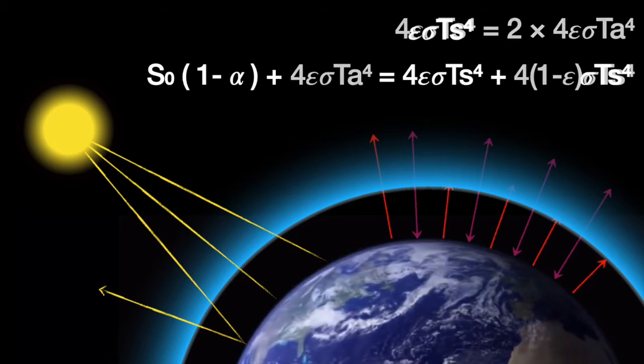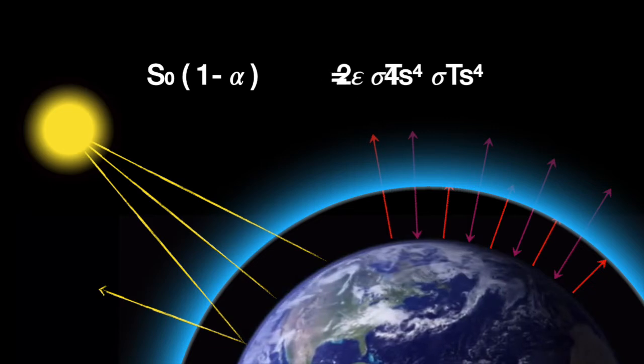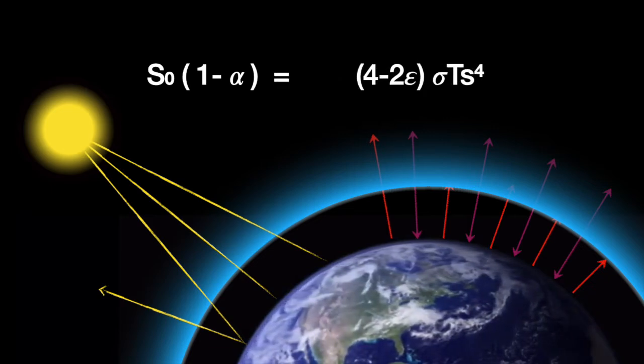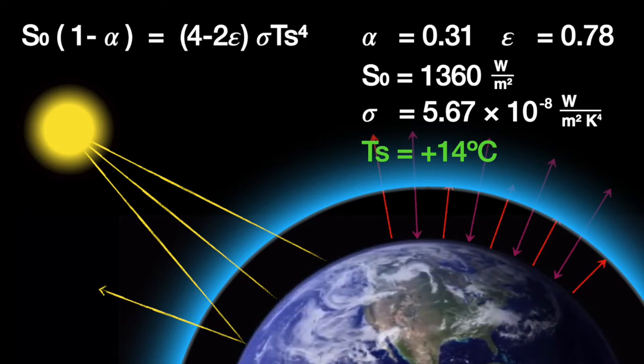The energy balance at the surface gives us another equation, which we can then solve and simplify to get an equation for the surface temperature, into which we can plug in some values and arrive at a much more reasonable 14 degrees Celsius.